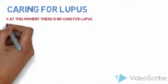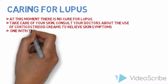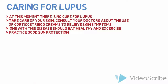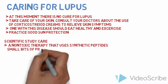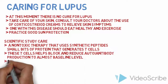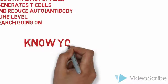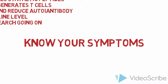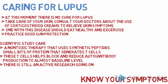Caring for lupus: at this moment, there's no cure for lupus, but it's good to take care of your skin and consult your doctor for creams to relieve skin symptoms. One with the disease should eat healthy, exercise, and practice good sun protection. There has been a scientific study called CARE — a non-toxic therapy that uses synthetic peptides, small bits of protein that generate T cells. These T cells help block and reduce auto-antibody production to almost a baseline level, and there is still active research going on to see if this non-toxic therapy can put lupus in remission for good. But most importantly, with any disease including lupus, it is best to know your symptoms.